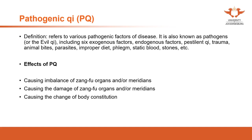The last effect of pathogenic qi is that it can cause change of body constitution, especially for long-term disease. For example, someone who suffers from coldness for a long time — after a long time, their body constitution can change. This situation is very similar to putting an outdoor plant indoors under a roof for a long time — you are going to change the property of the plant, and if the property changes, the plant won't grow well.